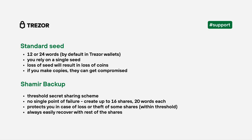Shamir Backup aims to solve this problem. Shamir Backup is essentially a method of splitting the seed into multiple unique shares. To recover the wallet, a specified number of shares has to be collected and used. The feature got its name from Adi Shamir, the author of Shamir's secret sharing algorithm.